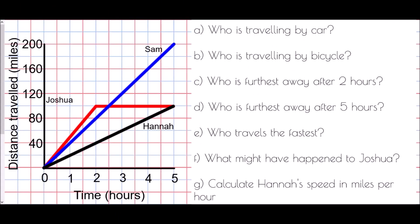Now we're going to look at some interpretation of graphs. We have three different people: Sam as the blue line, Joshua as the red line, and Hannah as the black line. Who is travelling by car? If we are travelling by car, we would expect the person to be moving very quickly, so their line would be steep. The steepest line is actually Joshua's — Joshua's line is steeper than Sam's. So the suggestion would be that Joshua is travelling by car.